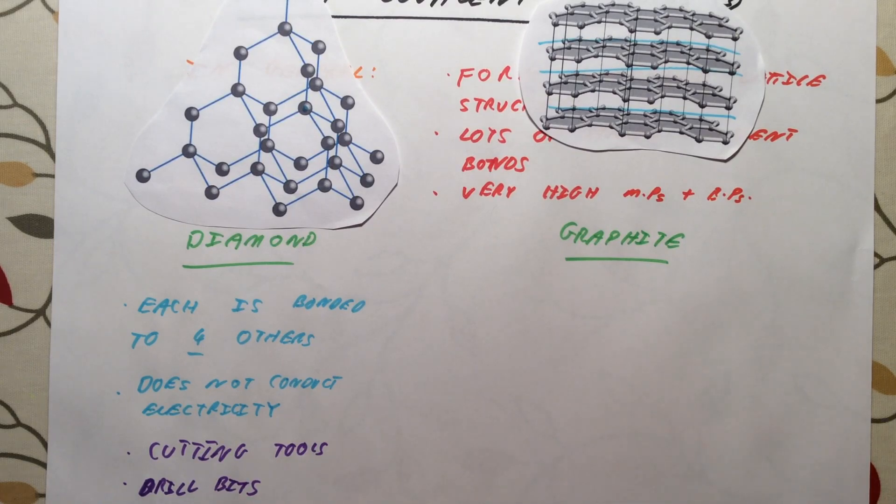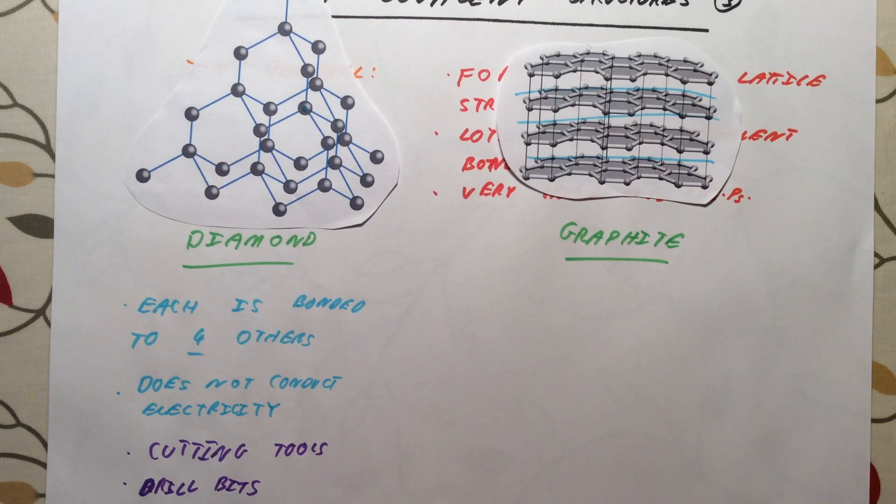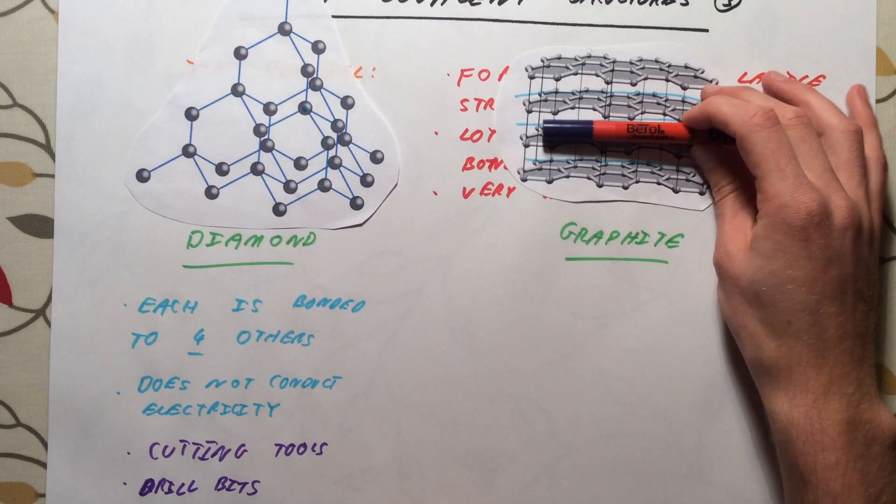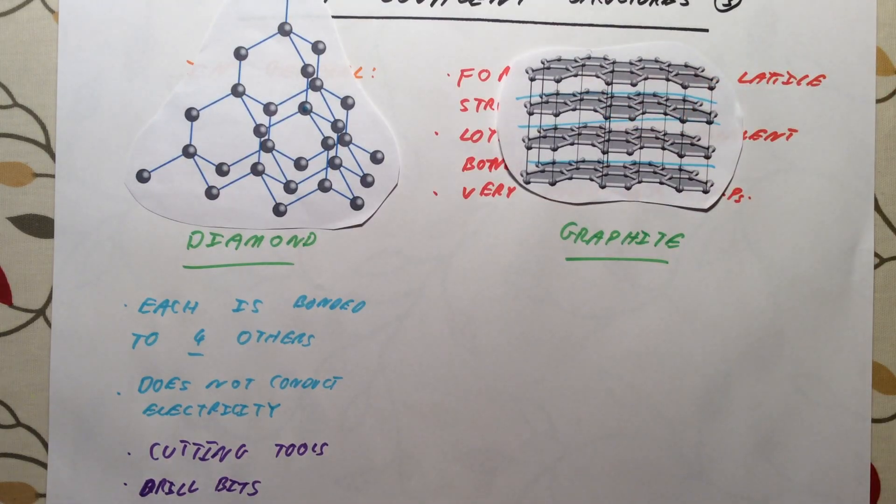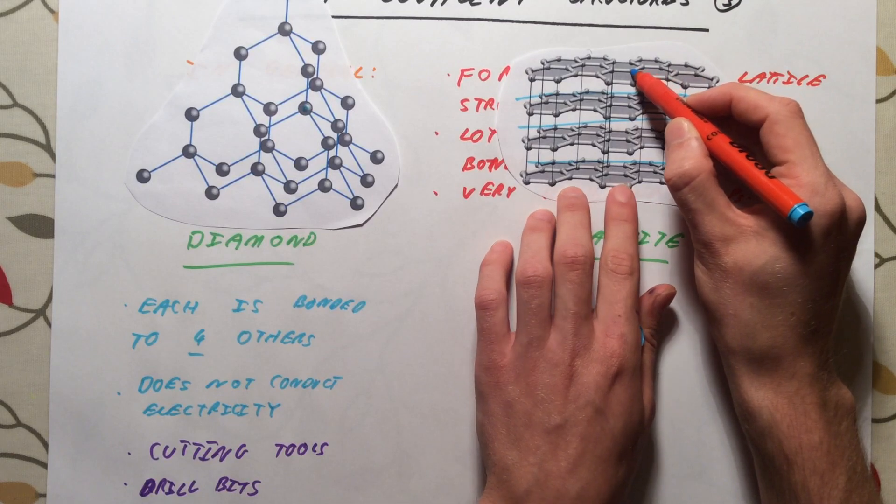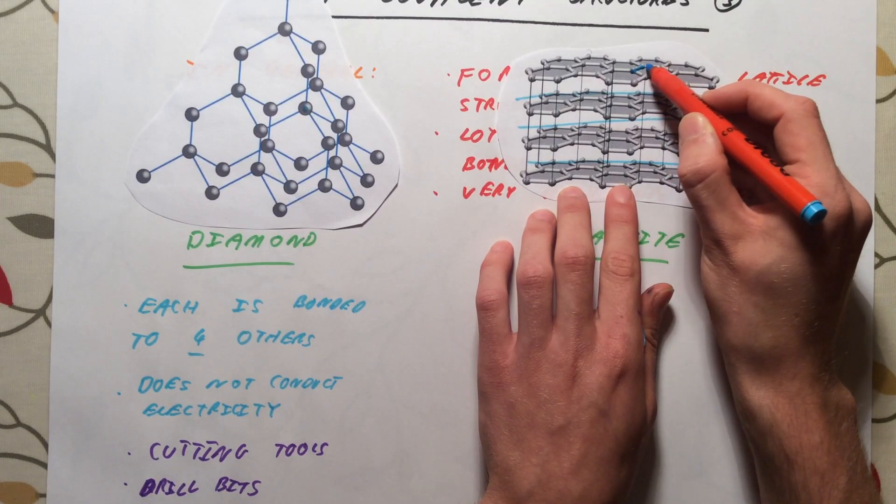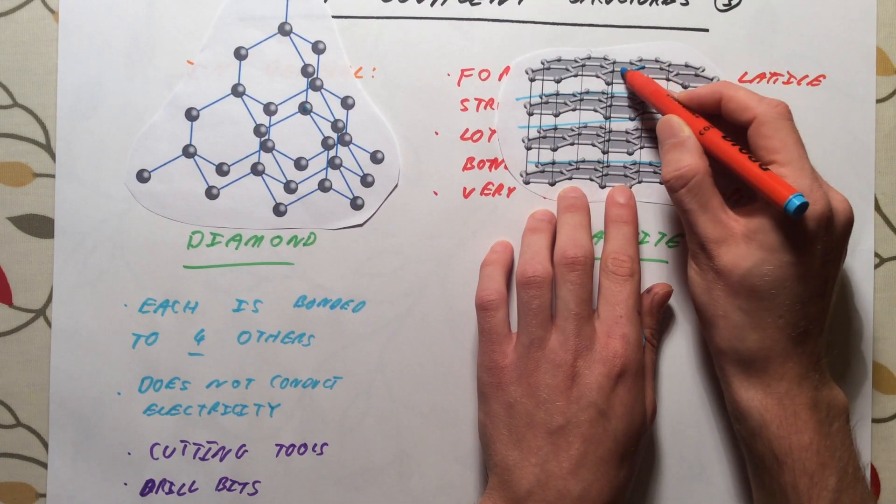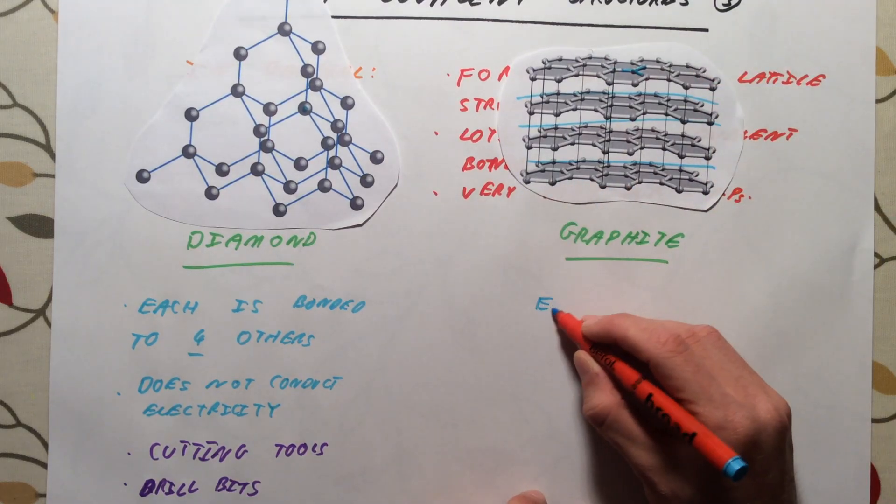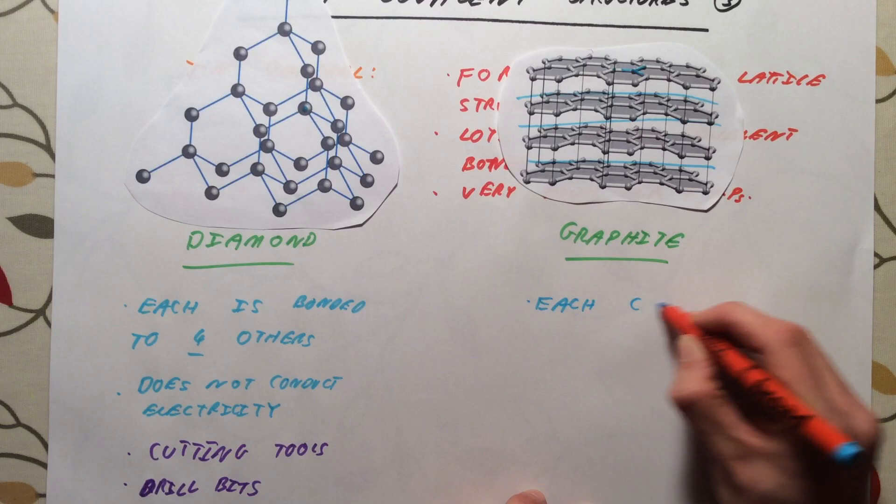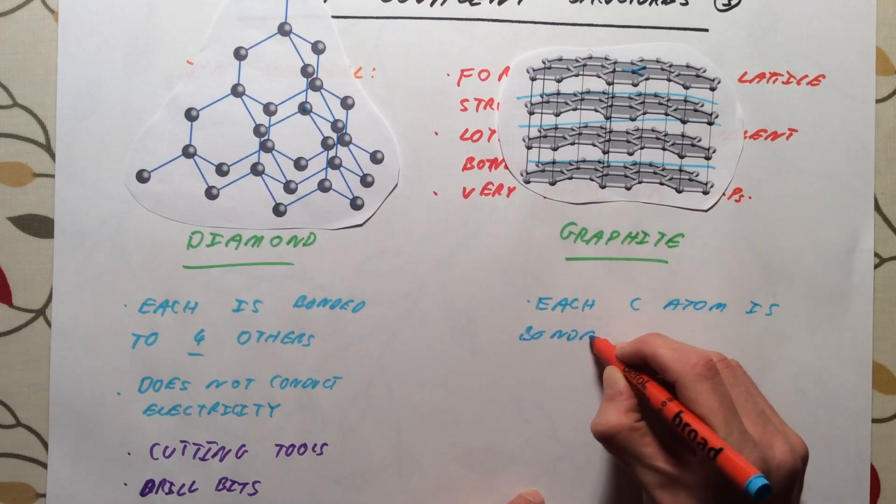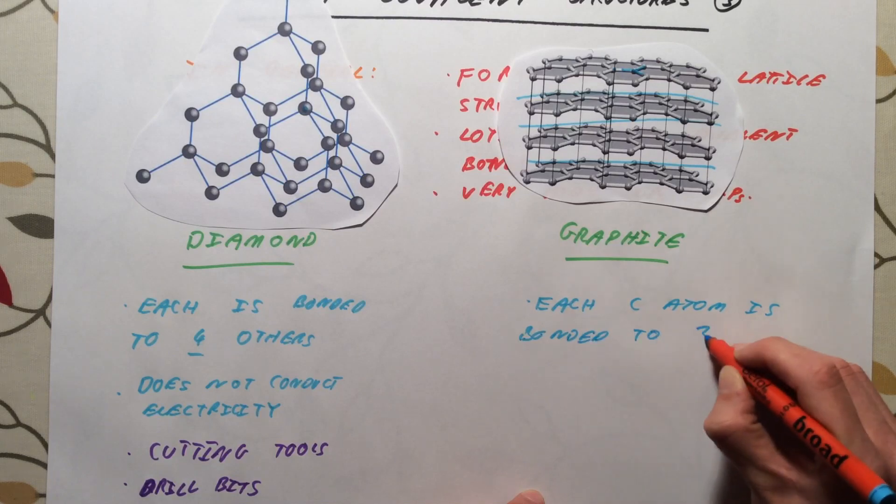Graphite is quite different in its structure and in its properties, and the reason why is because of these layers you have here. In graphite, every carbon atom is actually bonded to three others. So if we take just this one as an example here, it's got one covalent bond to this carbon there, one to that, and one to that.